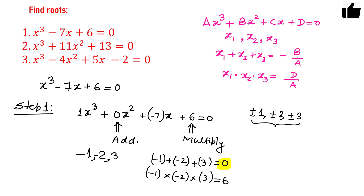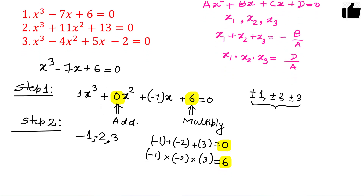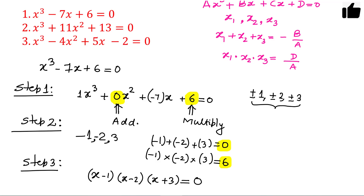So the sum is zero, which matches the coefficient, and the product is six, which matches the constant term. We have found the three numbers. In step three, these numbers give us the factors: x minus one, x minus two, and x plus three.